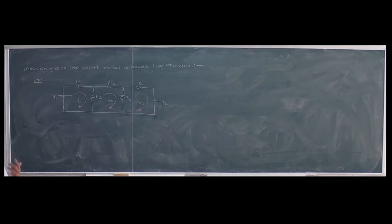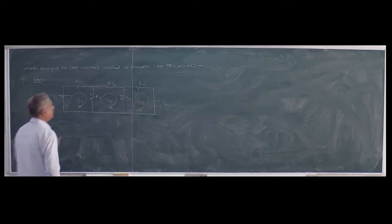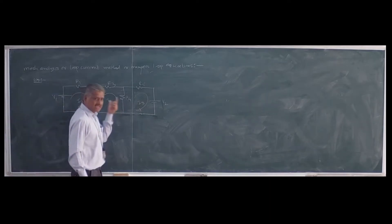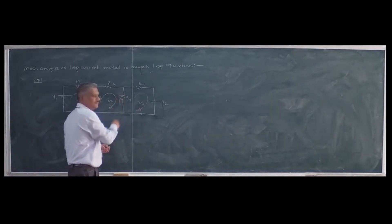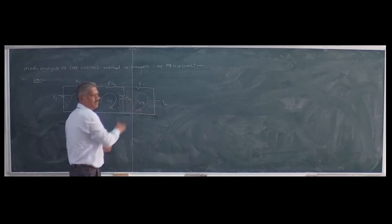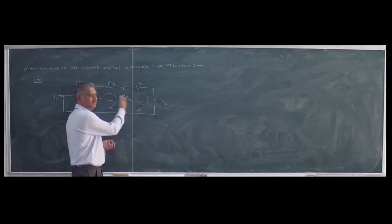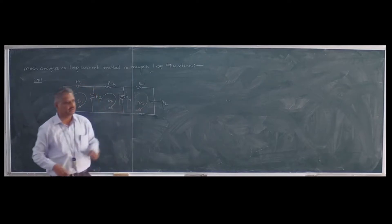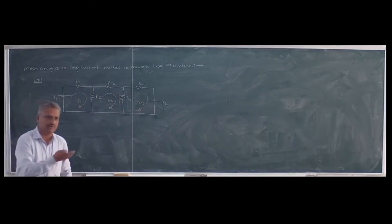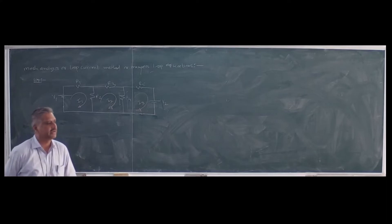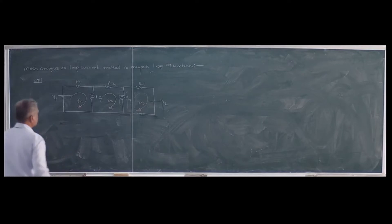We have three equations and three unknowns. We can solve those equations simultaneously and calculate the values of I1, I2, and I3. Once we know I1, I2, and I3, we can calculate the current in any branch. For example, if the current in R4 is asked: I2 flows downward and I3 flows upward, so the resultant current is I2 minus I3 or I3 minus I2. When it will be positive or negative will be discussed when solving problems based on this.